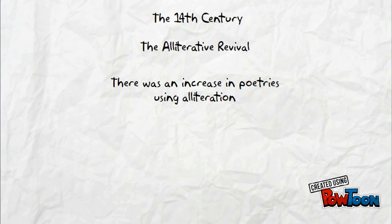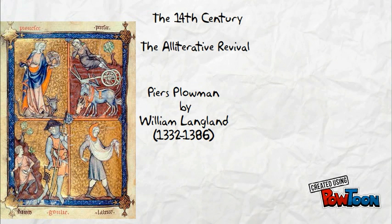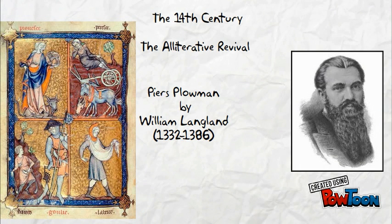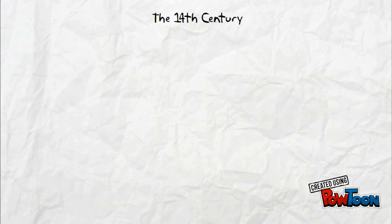Another famous work during this time was Piers Plowman, an alliterative allegorical poem written by William Langland. It is a poem about a man and narrator named Will and his dream visions. It is considered a satire of religious beliefs and religious corruption during the time, largely influencing the spiritual level of society to the extent that it was read as a reformist Protestant text in the 16th century. Now, speaking of spiritual writings, there is an increase of spiritual writings in the 14th century — but let's take a break.